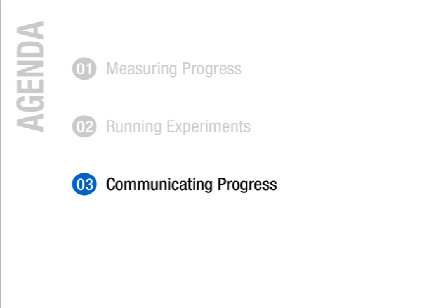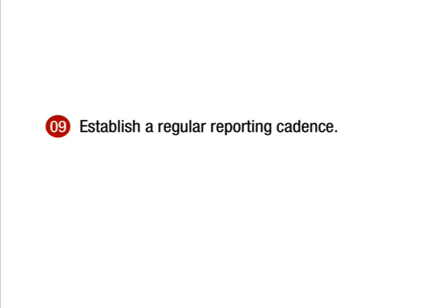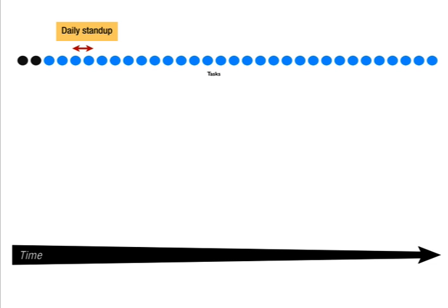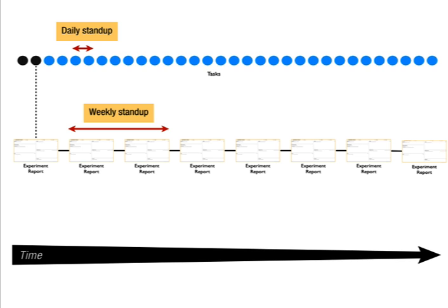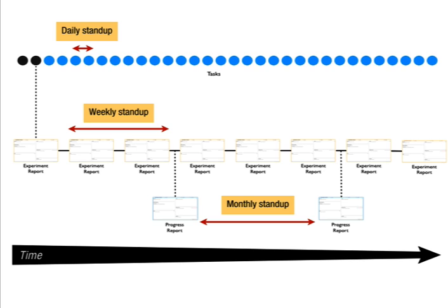Let's switch gears now and talk about how we communicate our learning from experiments. While running experiments is a key activity for lean startups, running them effectively requires a lot of discipline. One of the things we do is establish a daily, weekly, and monthly reporting cadence. Our daily stand-ups are mainly for task-level discussions. We get together weekly to review running experiments — this is also where we review and propose new experiments. And finally, we also get together monthly to measure our cumulative progress and learning against our desired success metrics. This is where we adjust strategy if needed, and the learning from these monthly meetings is also what we share with our external advisors.